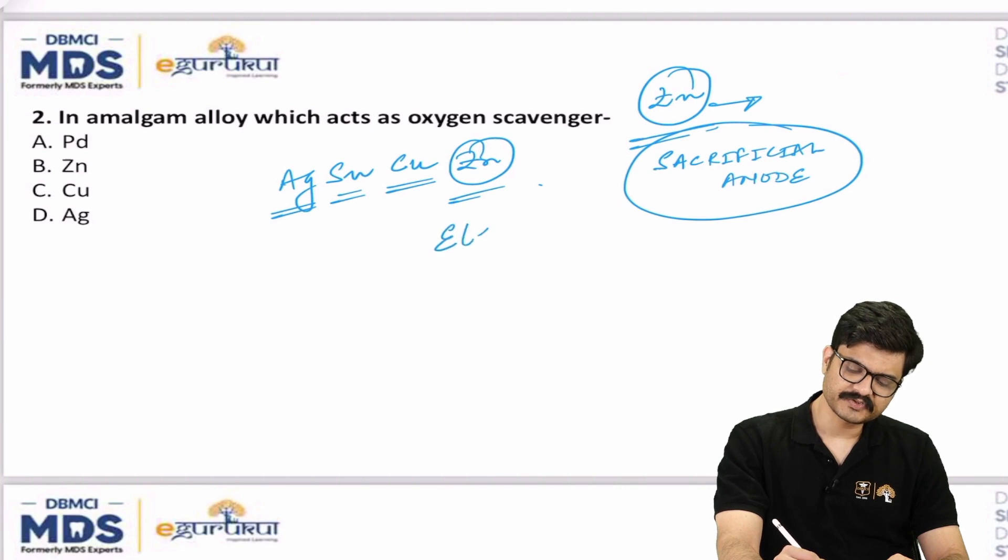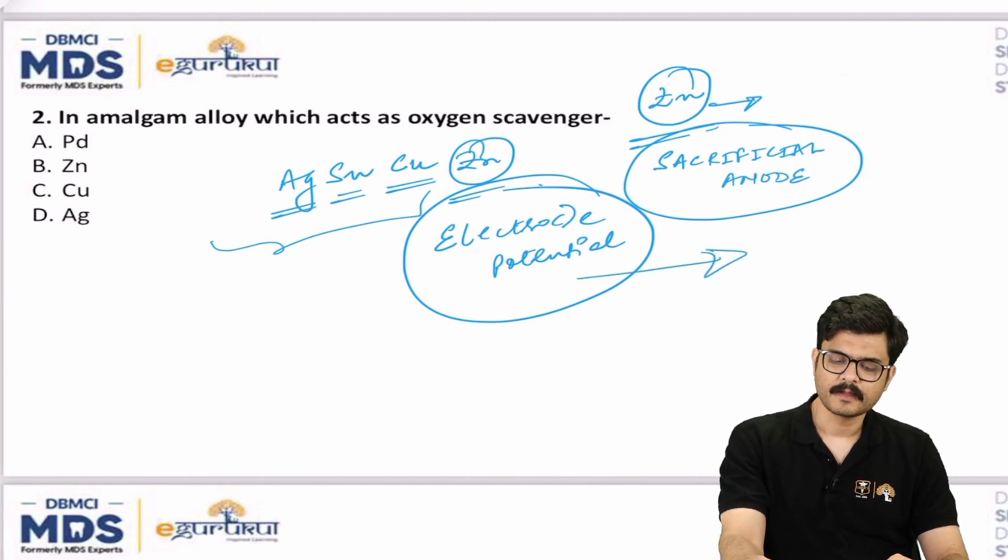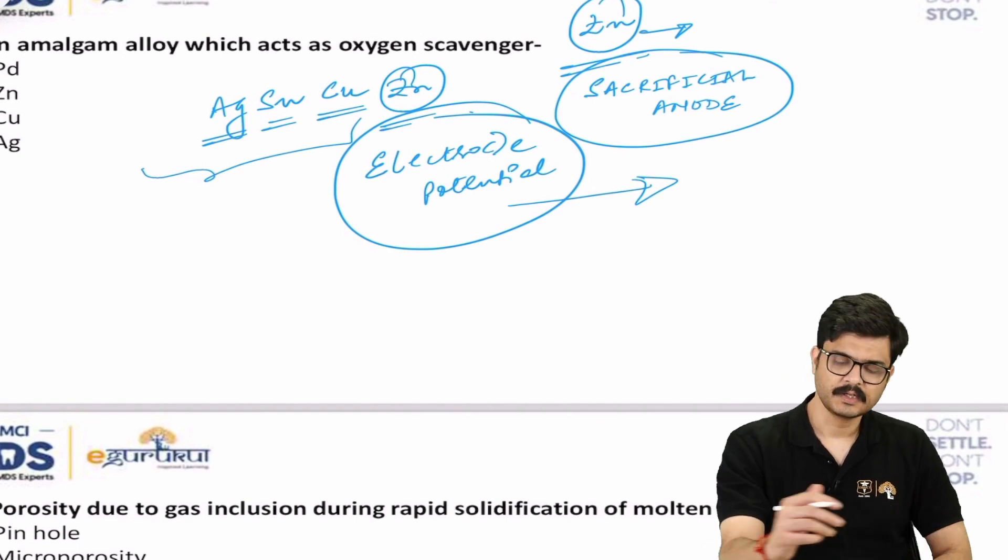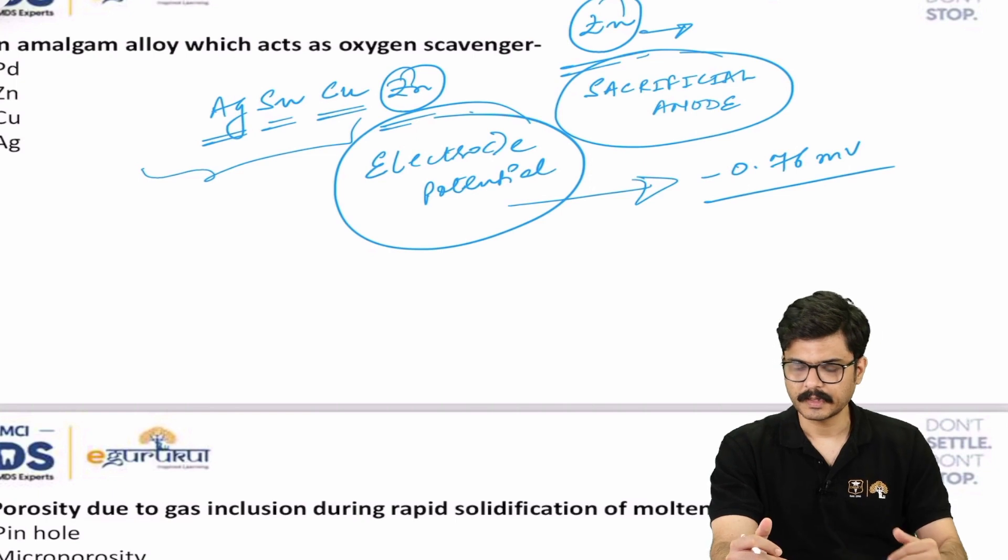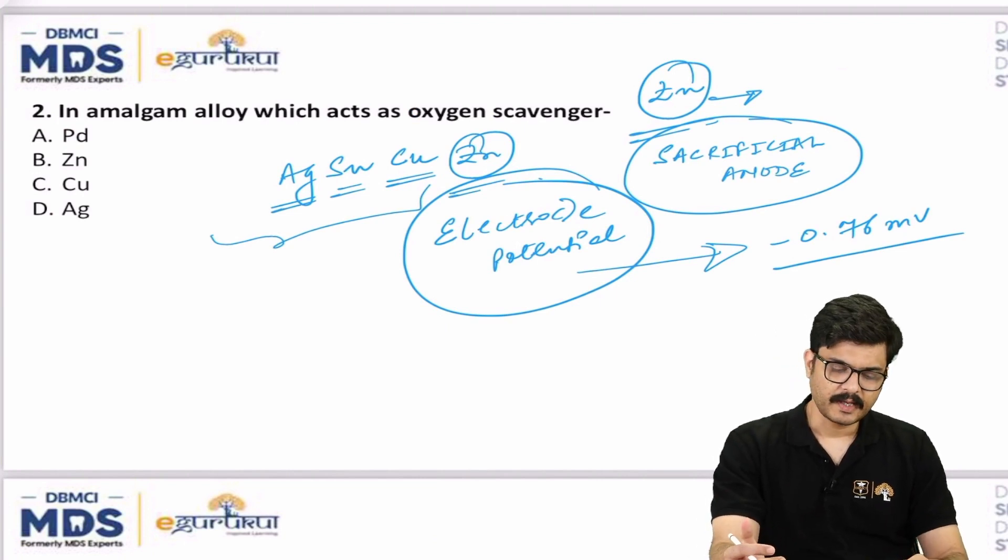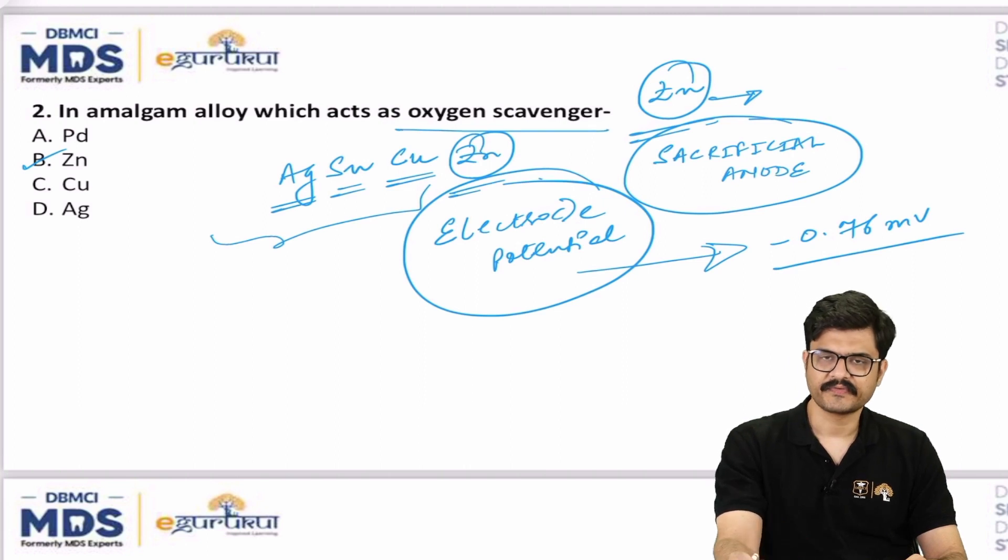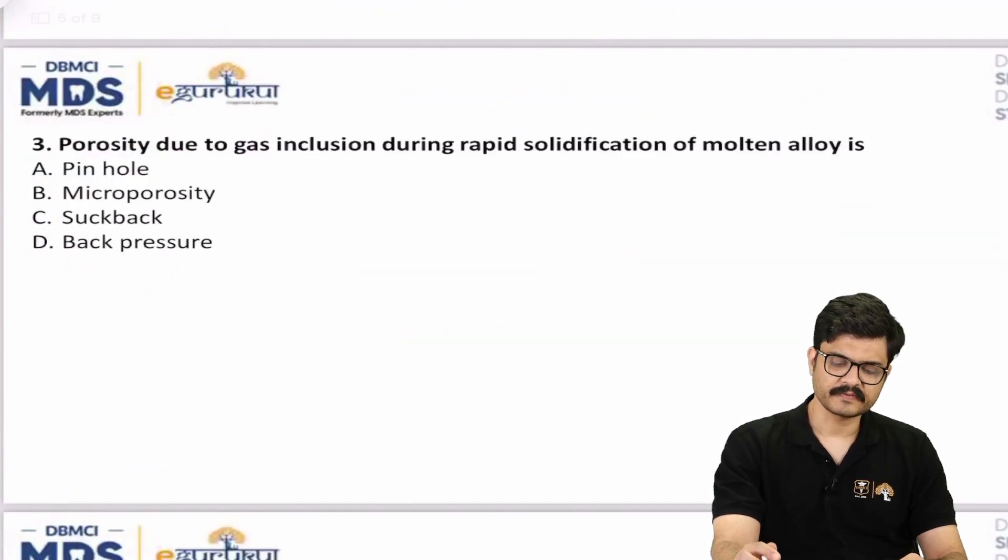What does an amalgam alloy have? Silver, some amount of tin, copper, and zinc. When I say it acts as a sacrificial anode, basically what I imply is that its electrode potential is lower than the other important components, which implies that in case of corrosion or oxidation, it's going to sacrifice itself first before others. Why? Because its electrode potential is around minus 0.76 millivolt, which is lesser than silver, tin, copper. Hence it would itself undergo oxidation, acting as the oxygen scavenger and preventing the corrosion of other important components. So zinc is the answer here, oxygen scavenger or the sacrificial anode.